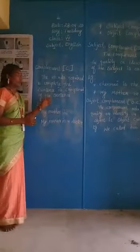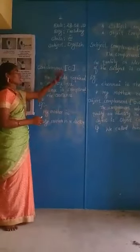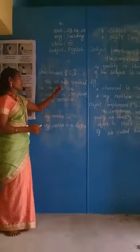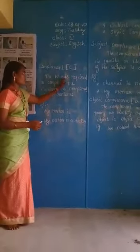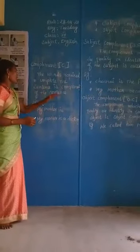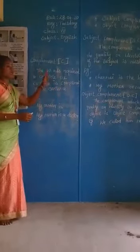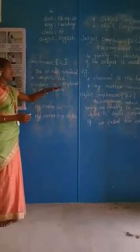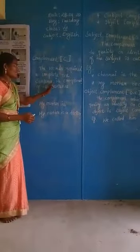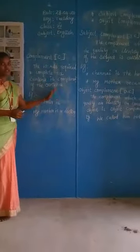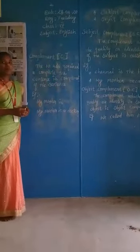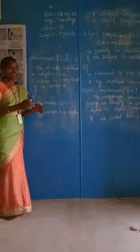Next one is complement. The symbol of complement is C. What is complement? The words required to complete the sentence is the complement of the sentence. Complement comes to complete the sentence.